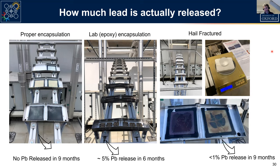Interestingly, only about 1% of the lead was released in nine months from the hail-damaged modules, which are laminated with an EVA-style foil and have edge sealant. So going back to the worst-case scenario, it needs to be scaled down by about two orders of magnitude. There is clearly very little chance the lead would escape, and realistically you would replace a cracked module long before nine months — it will have stopped producing power anyway.